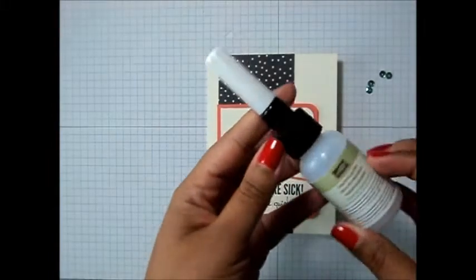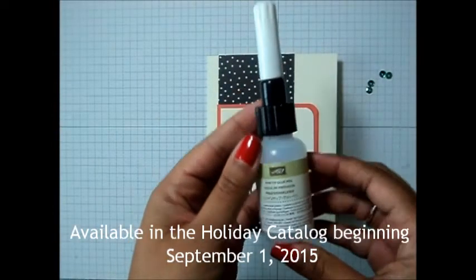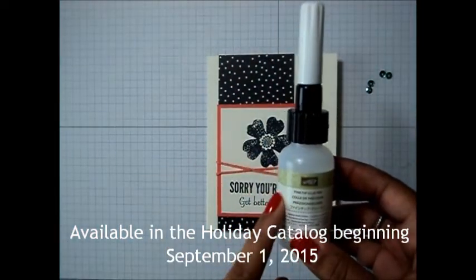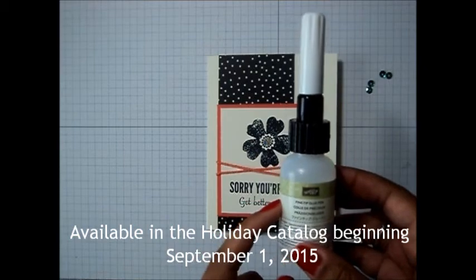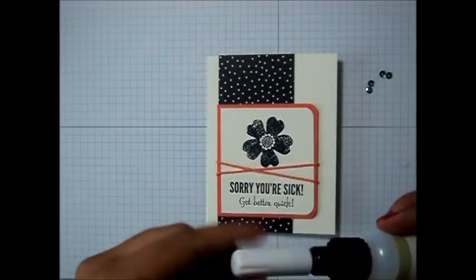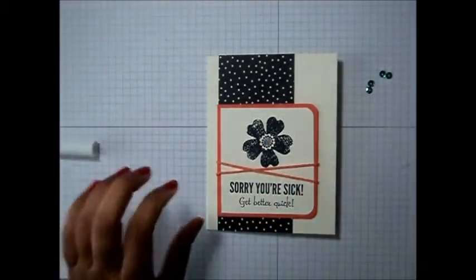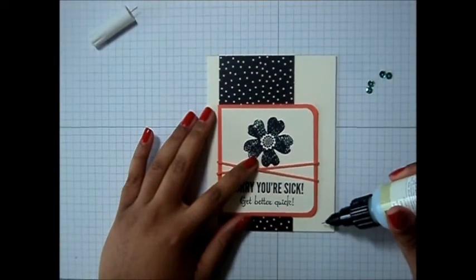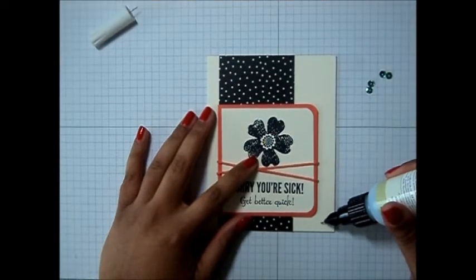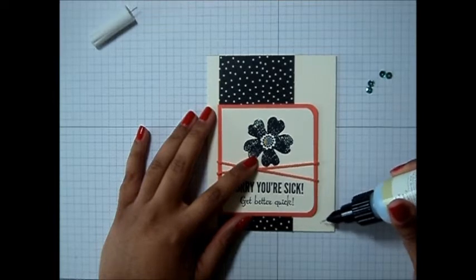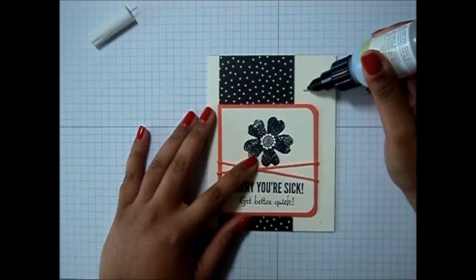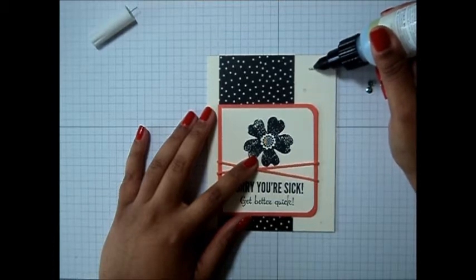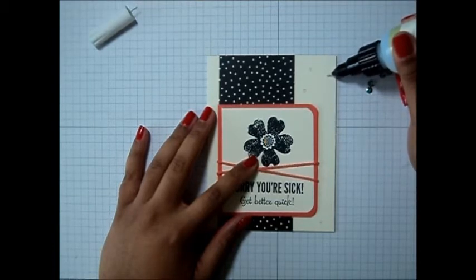And I'm going to use the fine tip glue pen to adhere these sequins. This will also be available starting September 1st from the new Stampin' Up! holiday catalog. So I'm going to use this today. Now this does take a little while to dry. It takes a little bit longer than the Tombow Mono Multi Glue. I'm going to put one sequin down there. Put one here. One here. And I'll do one here.